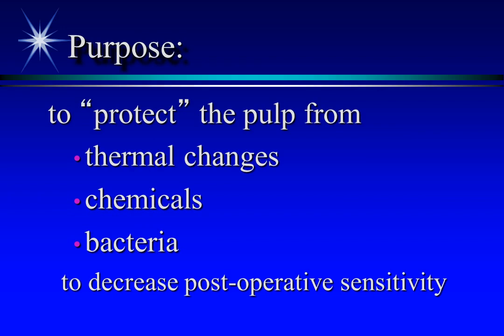Dentin is exposed during most operative procedures. Dentin is also exposed on roots and coronal surfaces due to abrasion, erosion, and/or attrition. Today's presentation is about some things the dentist may do to protect the pulpal tissue from insult.